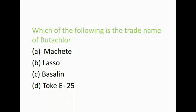Next question: Which of the following is the trade name of butachlor? The options are Machete, Lasso, Basalin, Toke E-25. Right answer is Machete. It belongs to amide group. It is the most important herbicide in rice crop.